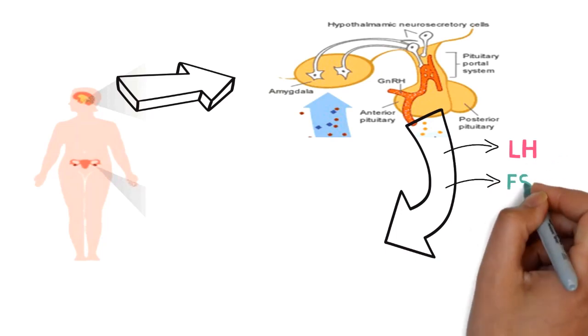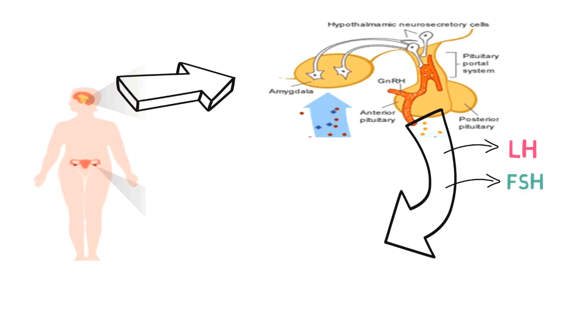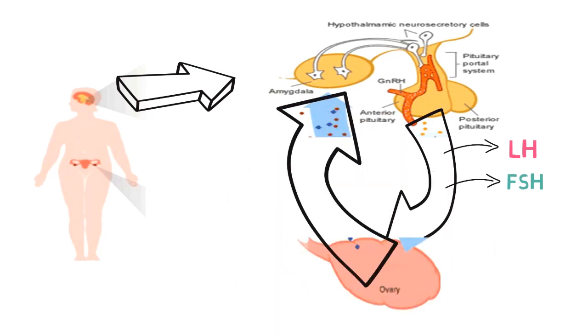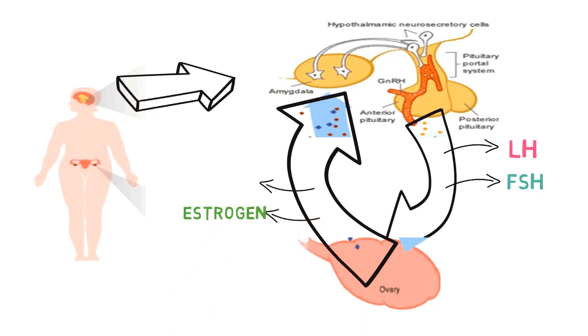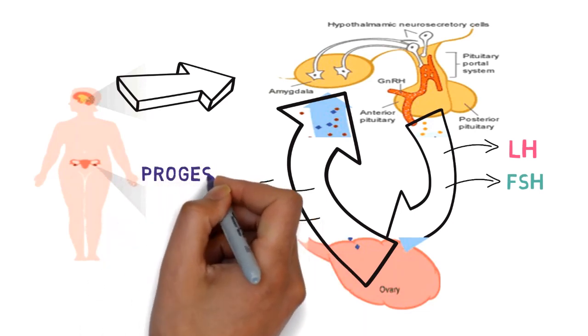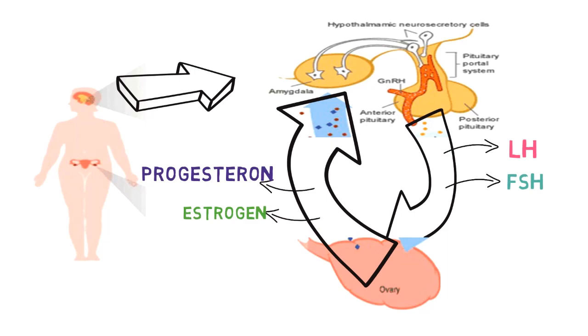After ovulation, the corpus luteum present in the ovary releases hormones like estrogen and progesterone, which causes a decrease in the gonadotropic releasing hormone, further maintaining their secretions.